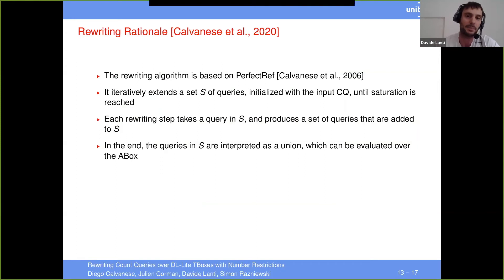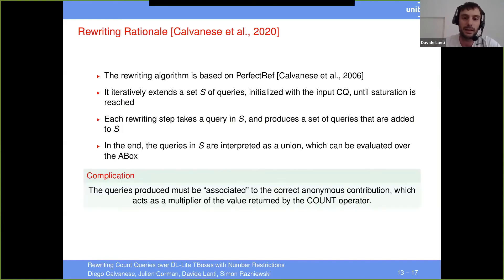And so this means that we have to create partitions and do lots of complex things to ensure that this rewriting somehow is correct. The rewriting is based on the perfect ref. And essentially, you start from the original query and then you apply the rules, you get set of queries, and you apply the rewriting rules until you reach saturation. And then in the end, you can interpret all these queries that you obtain as a big union, and you can evaluate this query over the A-box. This is the idea of the rewriting.